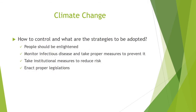How to control climate change and what are the strategies to be adopted? People should be enlightened, as our misuse of natural resources is the reason for this. We need to protect them by creating public awareness. Monitoring infectious diseases to detect early stages and take proper measures to prevent them. Take environmental management and institutional measures to reduce risk and face disaster preparedness for floods, droughts and health-related consequences. Enact proper legislations especially to control pollution and protect the environment.